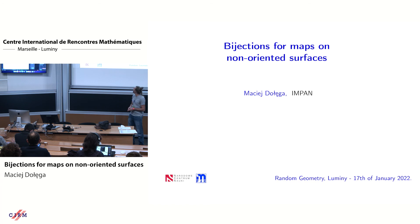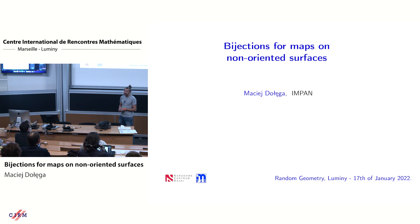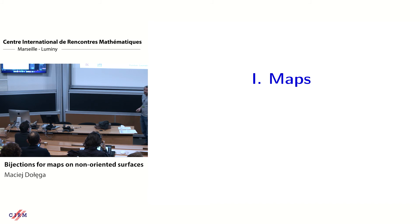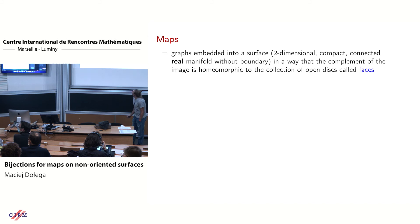The main message of this talk is that we can study the random geometry of surfaces other than the sphere, and I will mostly talk about bijections, which are a crucial tool to understand the geometry of large maps.